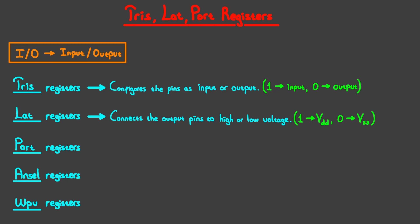Bits in the port registers — so port bits — will contain their corresponding pins' current state. So port bits are used to read the state of the input pin, which also means port registers are only relevant when the pin is configured as input. When read, if the input pin is at VDD level it will return 1, while if the input is at ground level it will return 0.